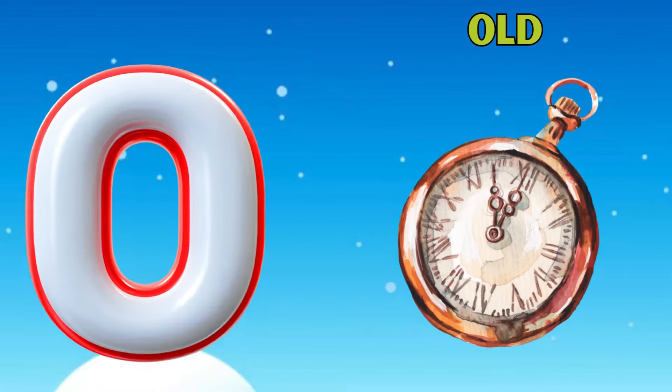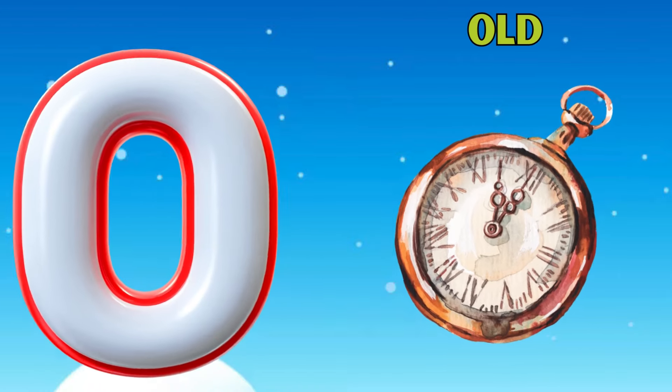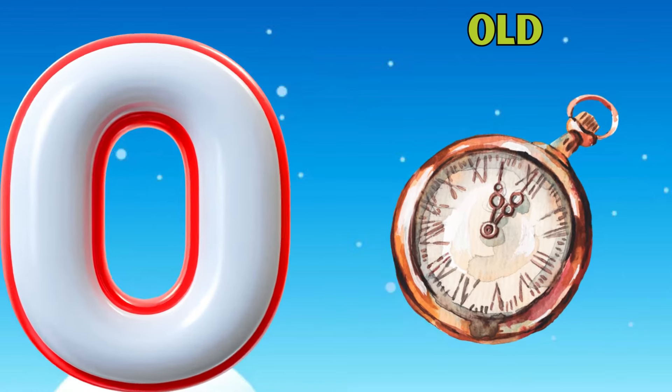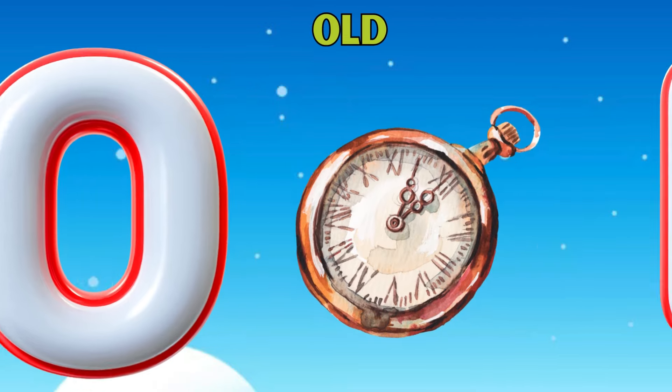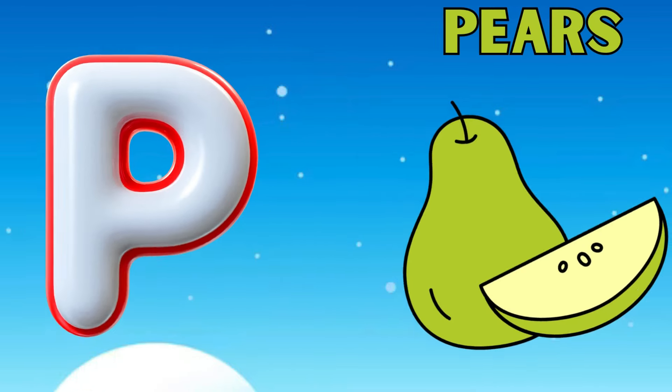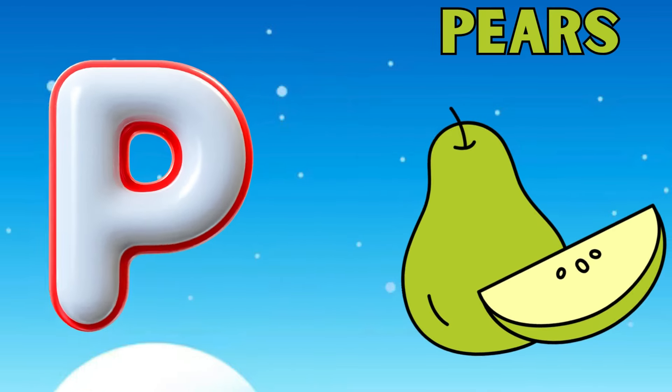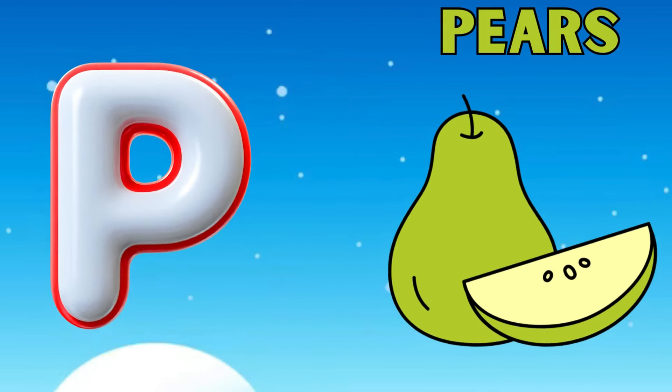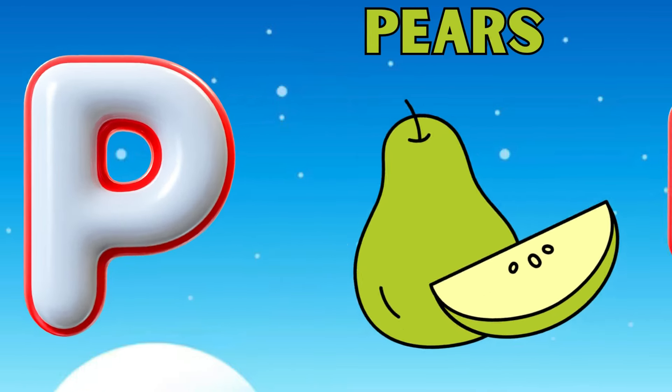O is for old, a, a, old. P is for pair, b, b, pair.